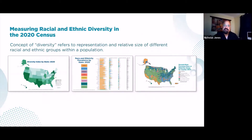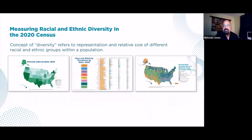Another way to understand the 2020 census results is to see how all racial and ethnic groups are distributed across the country and how this informs our understanding of diversity. Our definition of diversity refers to the representation and relative size of different racial and ethnic groups within a population. Diversity is maximized when all groups are represented in an area and they have equal shares of the population. We've used several approaches to measure racial and ethnic diversity, including a diversity index, prevalence rankings and diffusion scores, and a series of prevalence maps.